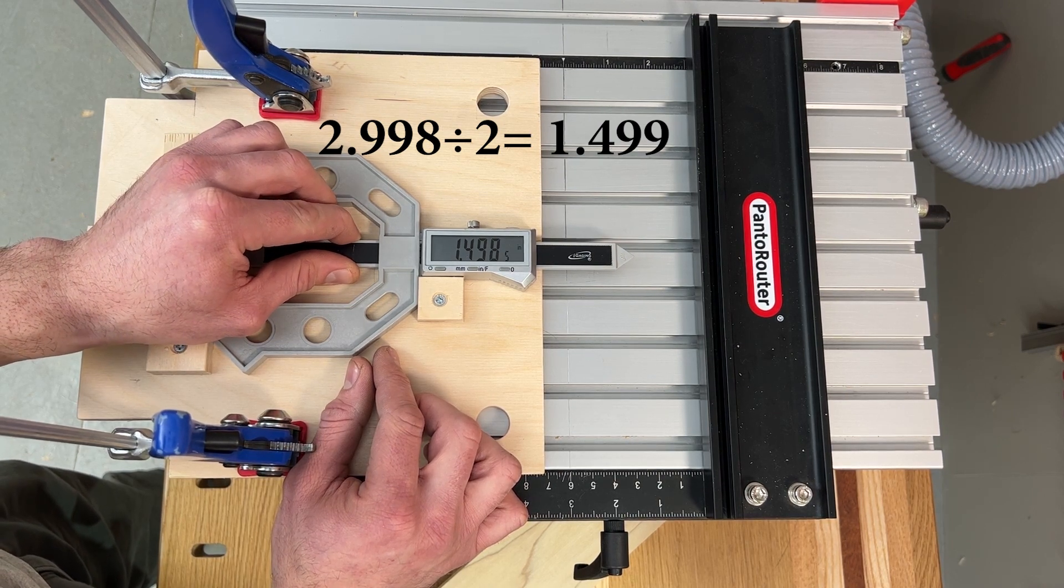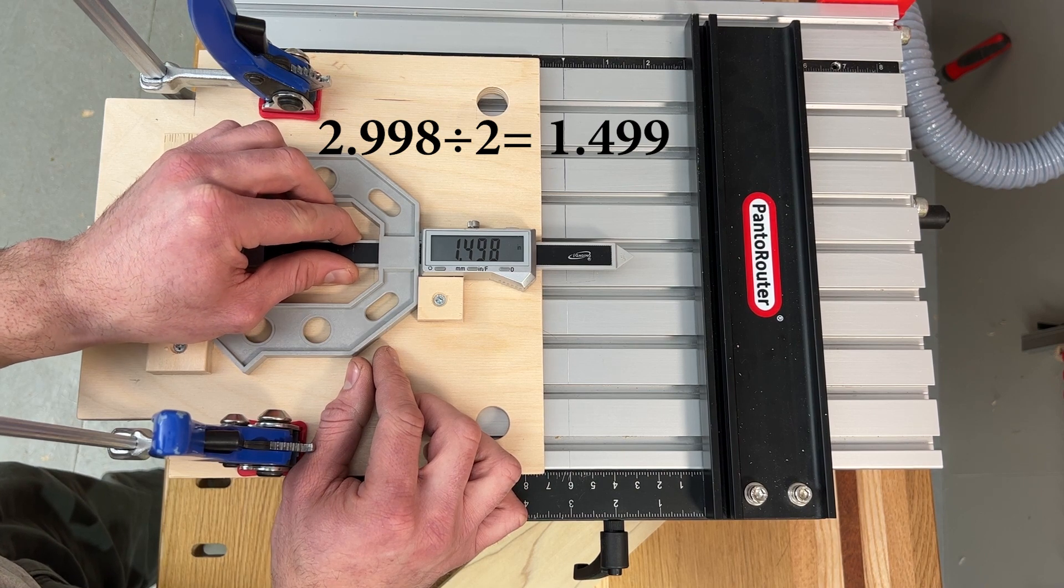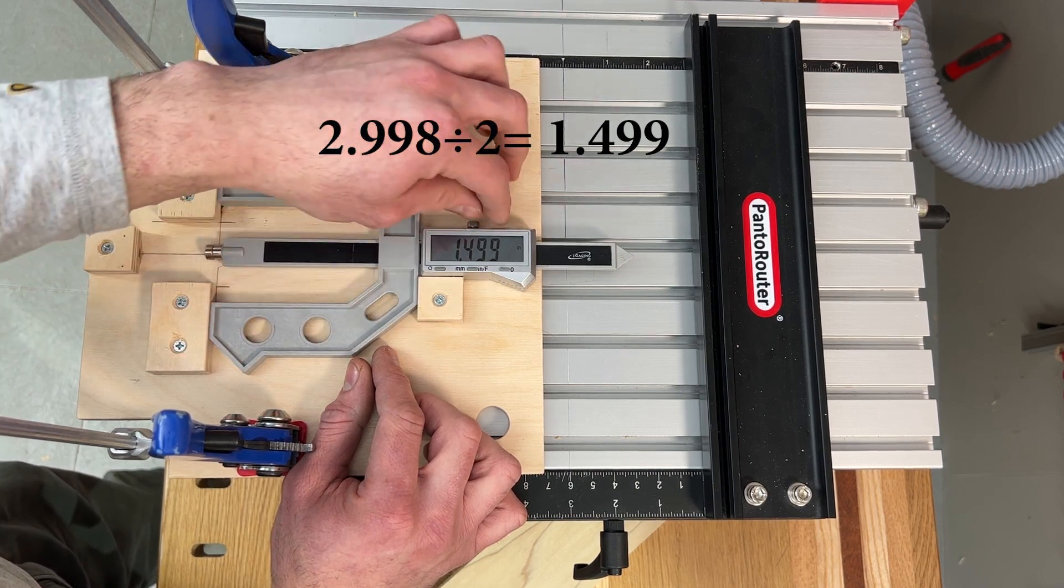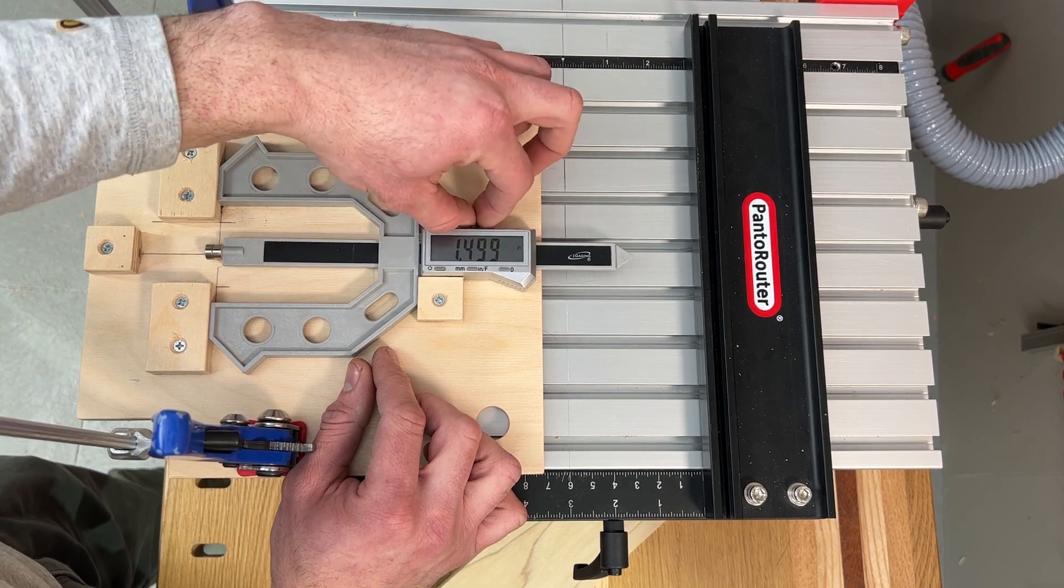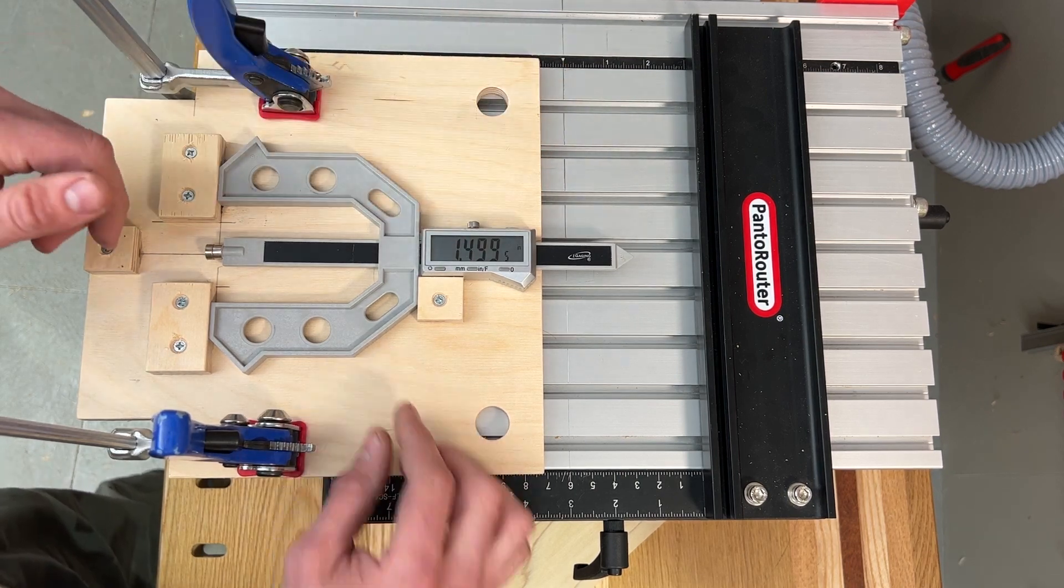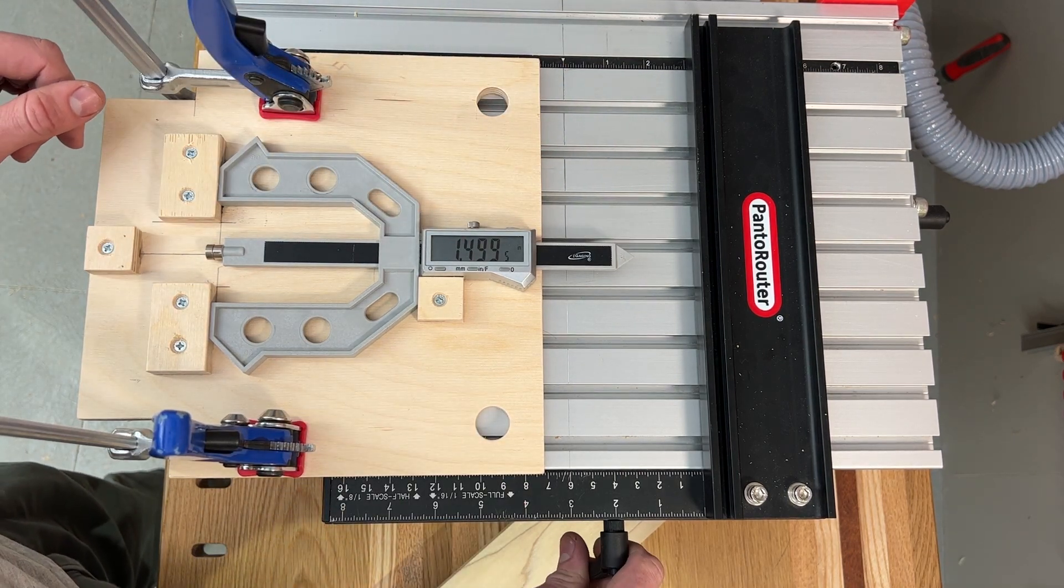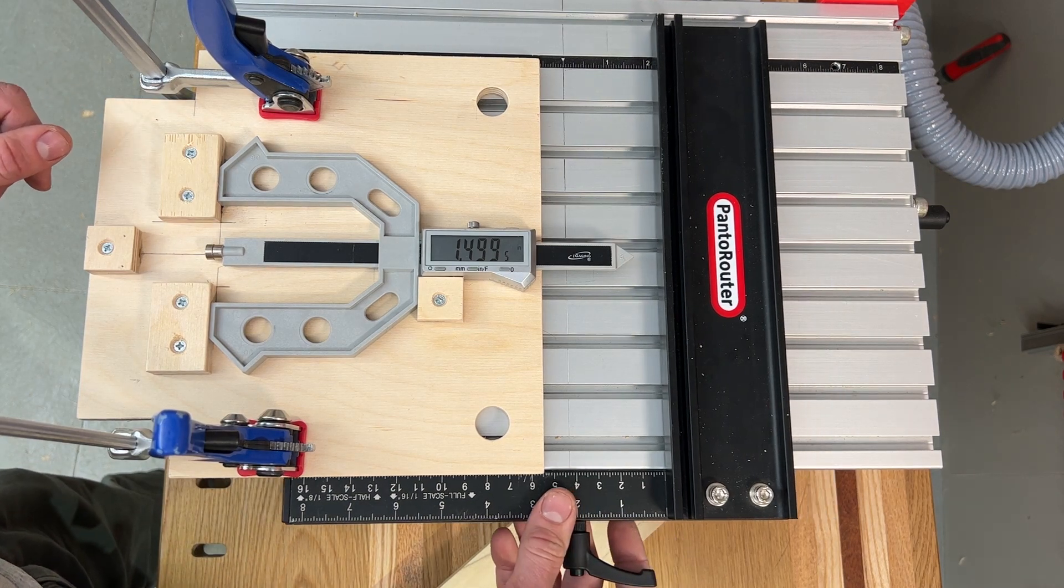With this width, you can easily divide by two to find center. Set the gauge to the center dimension, and slide the fence to contact the pointer and lock it. You then clamp your workpiece against the fence, and it'll be perfectly centered.